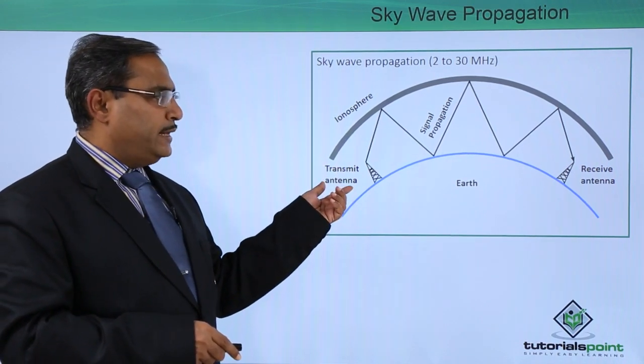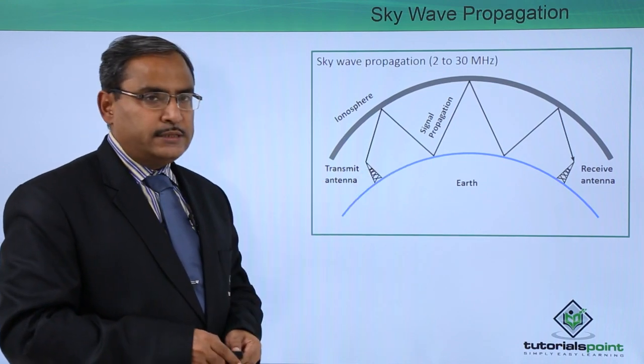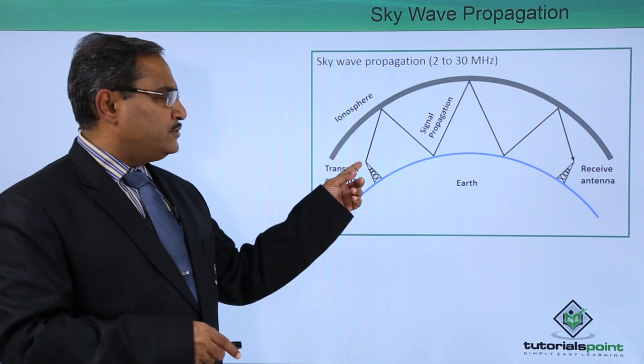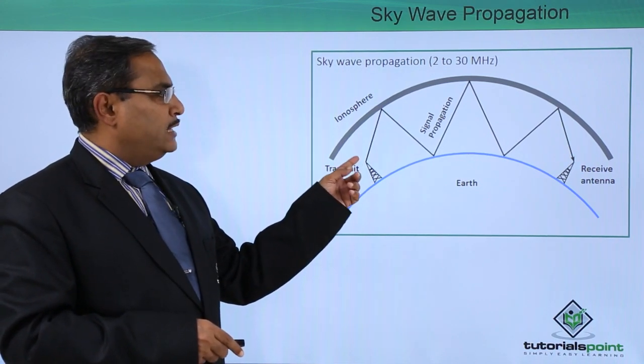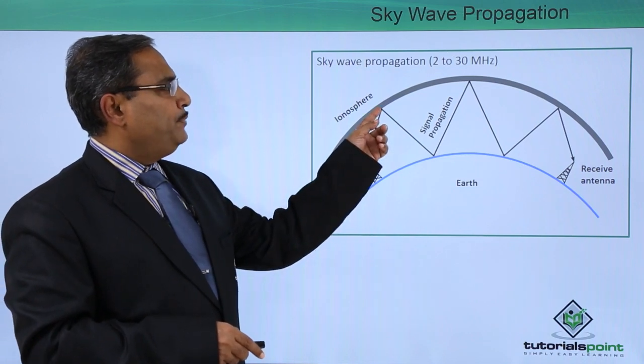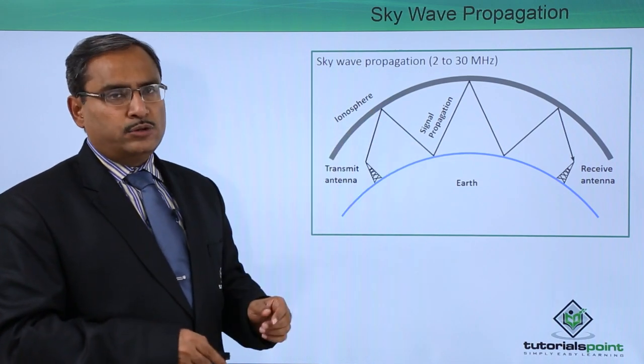Here we are having this transmitting antenna and there we are having this receiving antenna. Earth is there as usual. Now from this transmitting antenna the respective wireless propagation will be there, the signal will be going and then we are having this ionosphere.